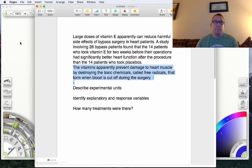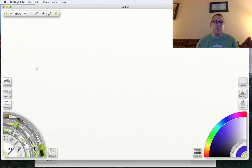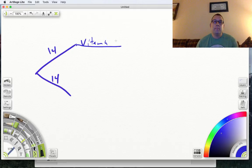All right, so what we're going to do first here is I'm just going to kind of map this out. We had 14, and we had 14. We're going to assume they are randomly assigned. All right, and then we had 14 people who got vitamin E, and we had 14 who had the placebo.